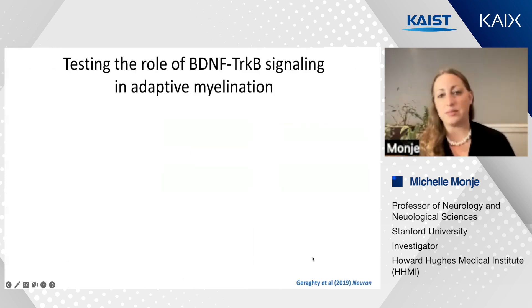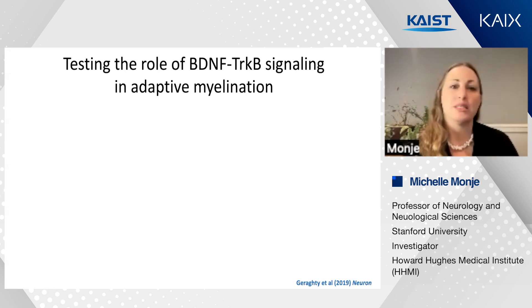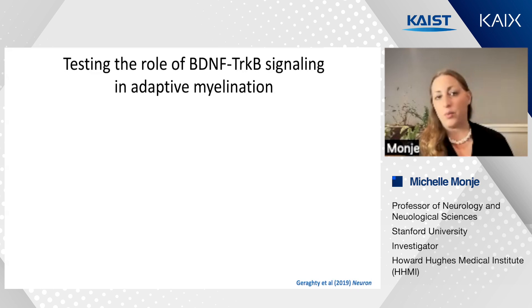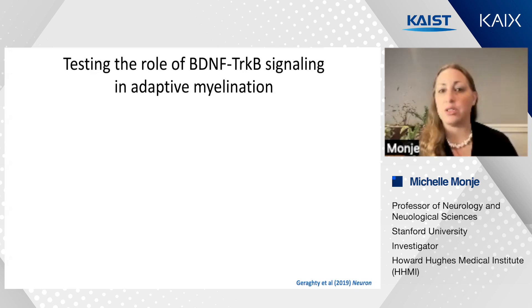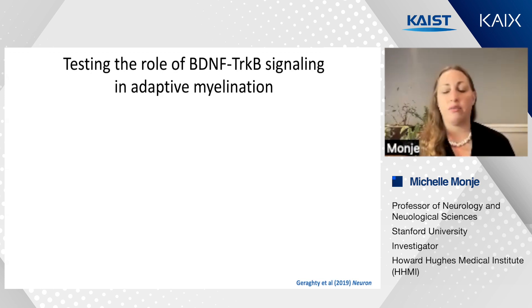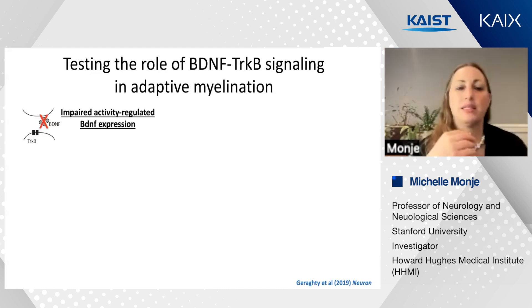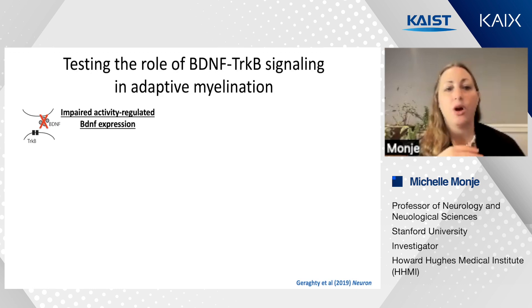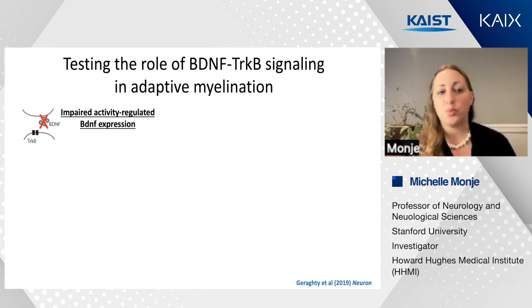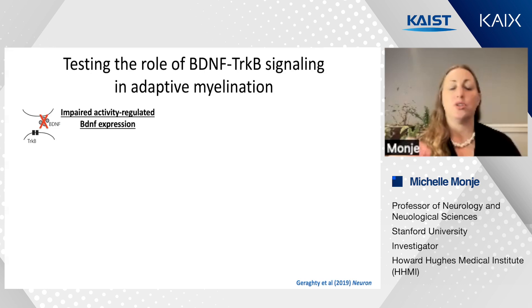What are the molecular mechanisms that mediate these interactions between neurons and oligodendroglial cells? One molecular hypothesis is that activity-regulated secretion of the neurotrophin brain-derived neurotrophic factor, or BDNF, signaling to its receptor TrkB on oligodendrocyte precursor cells might be an important part of that mechanism. We tested this molecular hypothesis using two different genetically engineered mouse models.